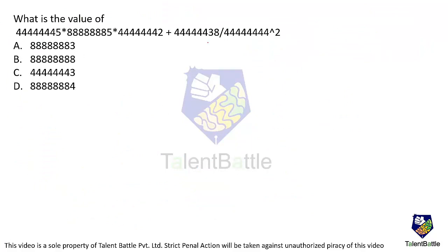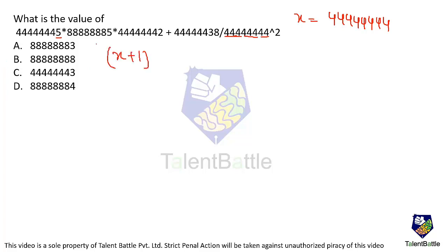Next question: they give an expression and ask for its value. Observing the expression, almost everything has eight 4s, with different last digits. Let x equal the number with eight 4s (i.e., 44444444). The first term's last digit is 5 instead of 4, so that's x + 1. The next has all eights — 2x — but ends in 5 instead of 8, so that's 2x − 3.